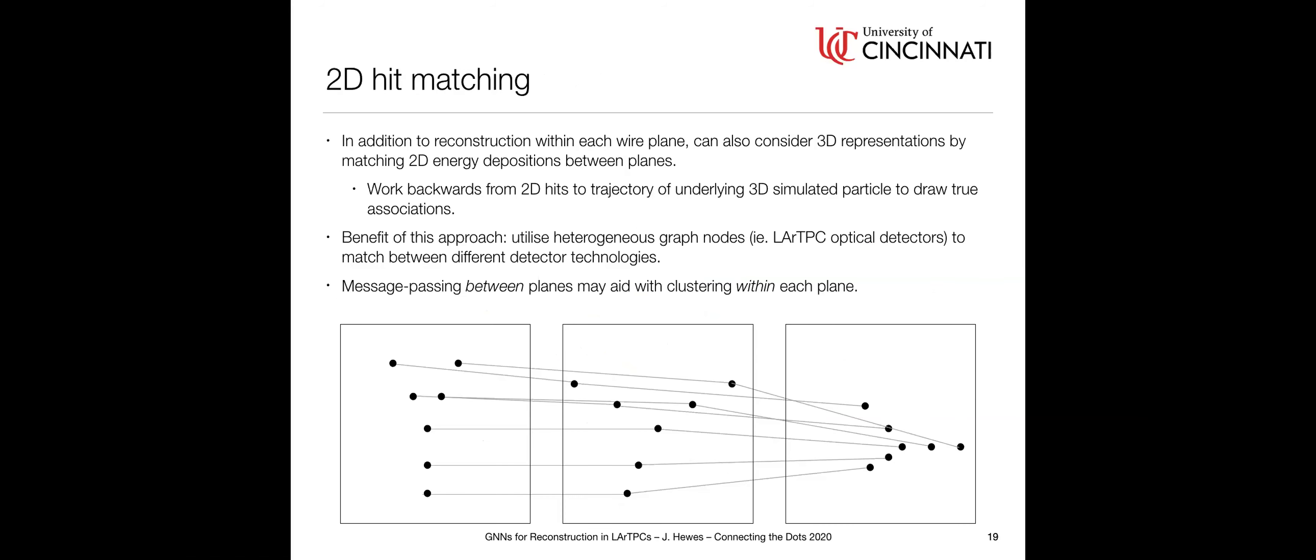Another thing we can think about doing on top of that, if we're doing this within each wire plane, as a later step in this workflow, we could consider looking at 3D representations by matching those 2D energy depositions within each plane back to the true particle and then using that to draw relationships between planes as well as inside of each plane. One of the things you could think about doing beyond just drawing these relationships between the views is also introducing different types of graph nodes. For instance, a lot of liquid argon TPCs have optical detectors which give you timing information as well as the spatial information from the TPC itself. You could think about designing a graph that can relate those two different types of information to each other and help you with time tagging. If you're doing message passing, it's possible that if you have a network which can reconstruct inside a plane and between planes simultaneously, those two things may be able to help refine each other. That's the kind of approach we're thinking about right now.